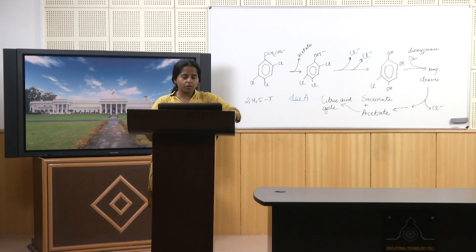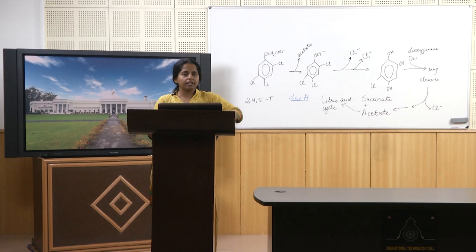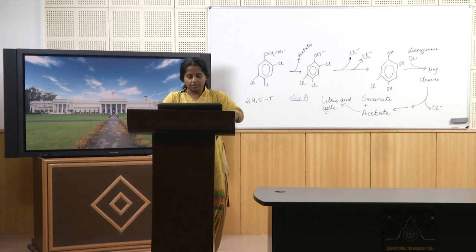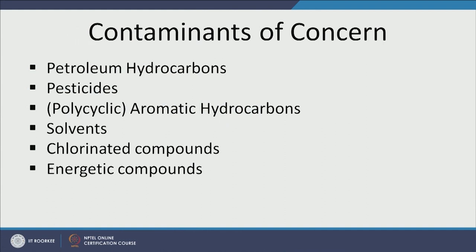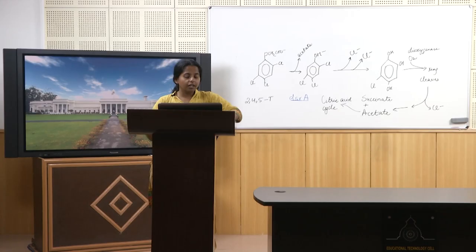Pesticides are certainly a major concern in India. Fertilizers are another biggie — some fertilizers are taken up by microbes or algae or plants, which can cause eutrophication in lakes. Some fertilizers are recalcitrant. We also have energetic compounds, which are rich in energy and usually degrade fast. Then we have inorganic constituents such as metals. And recently, pharmaceuticals and personal care products have emerged as a major source of environmental problems.